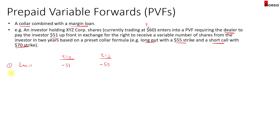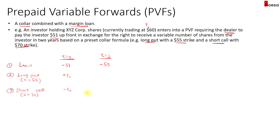In the second part there is the collar. The long put has a strike of $55, with a premium P0. There is also a short call with a strike of $70. Since it's a short position, there's a premium received when selling it, but it becomes a future liability.